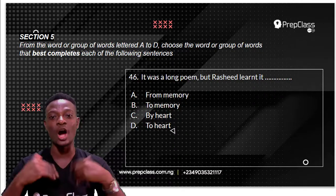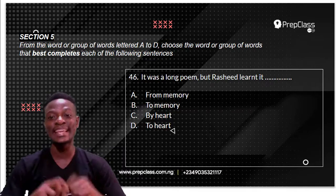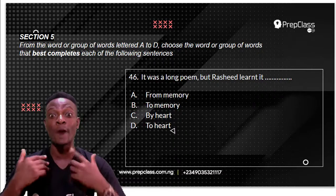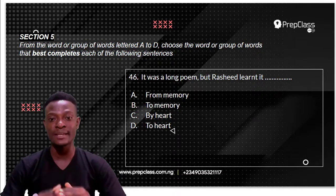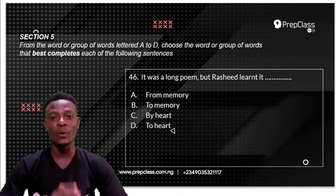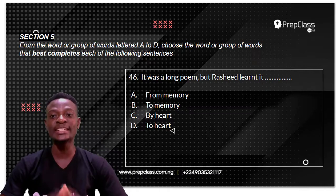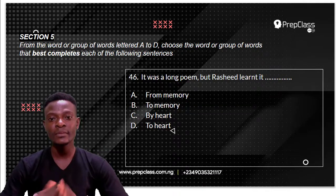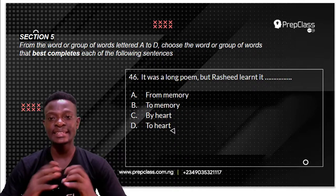So we are expected to select the option that best completes the sentence. In each sentence, we have a blank space, and we are expected to select the option that will appropriately occupy that blank space. Question 46 reads: it was a blank poem but Rashid learnt it dash.